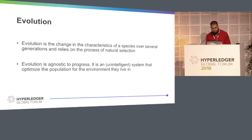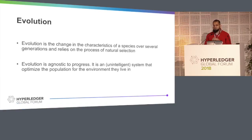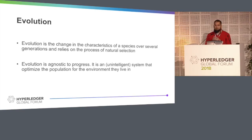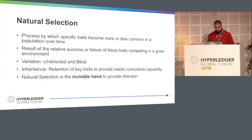Evolution is generally the change in the characteristics of a species over several generations, and relies on the process of natural selection. One problem with evolution is that whenever we talk about it, we always think of 'better.' That's not true. Evolution is agnostic to progress — it's quite blind. It's only optimizing you for the environment you are living in. It can be good or bad. It can be good now and bad 10 years later. Natural selection is a process by which specific traits become more or less common in a population over time, as a result of relative success or failures.